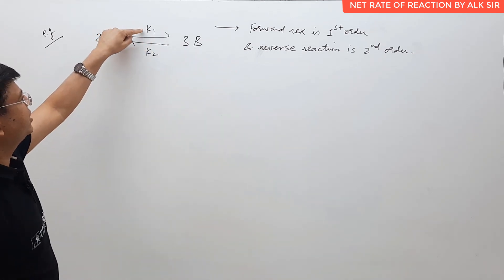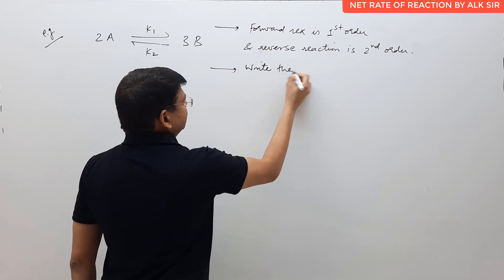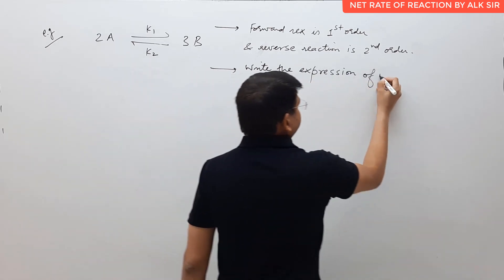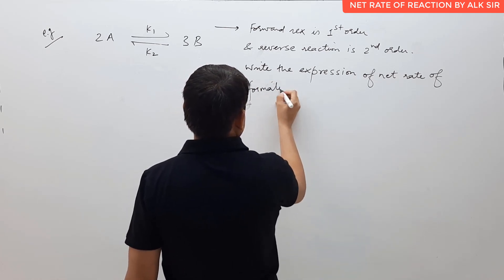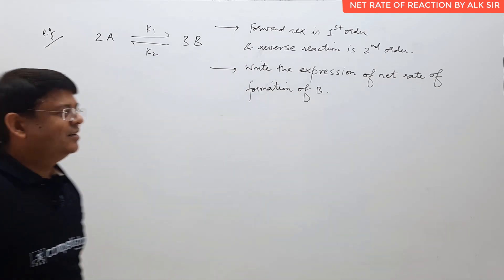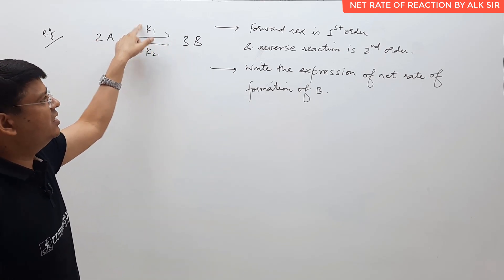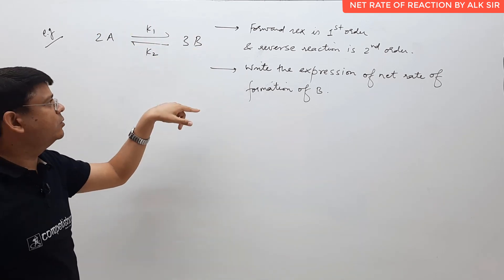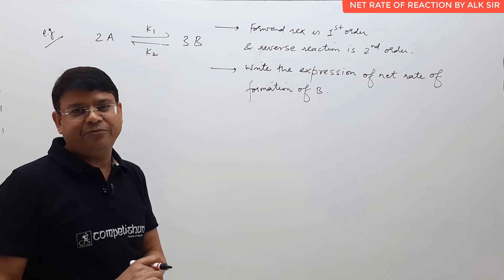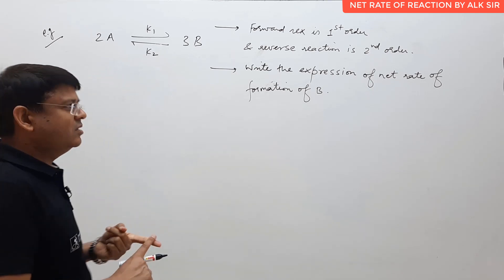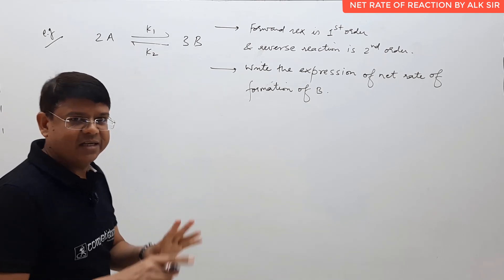Forward means the direction with rate constant K1, which is first order, and the reverse reaction with rate constant K2 is second order. We are asked to write the expression of the net rate of formation of B. For the specific case of 2A converting to 3B, these are the stoichiometric coefficients. K1 is the rate constant for the forward direction, K2 is for the backward direction. These concepts are very useful in mechanism of reaction on which JEE Main and JEE Advanced questions have already been asked.